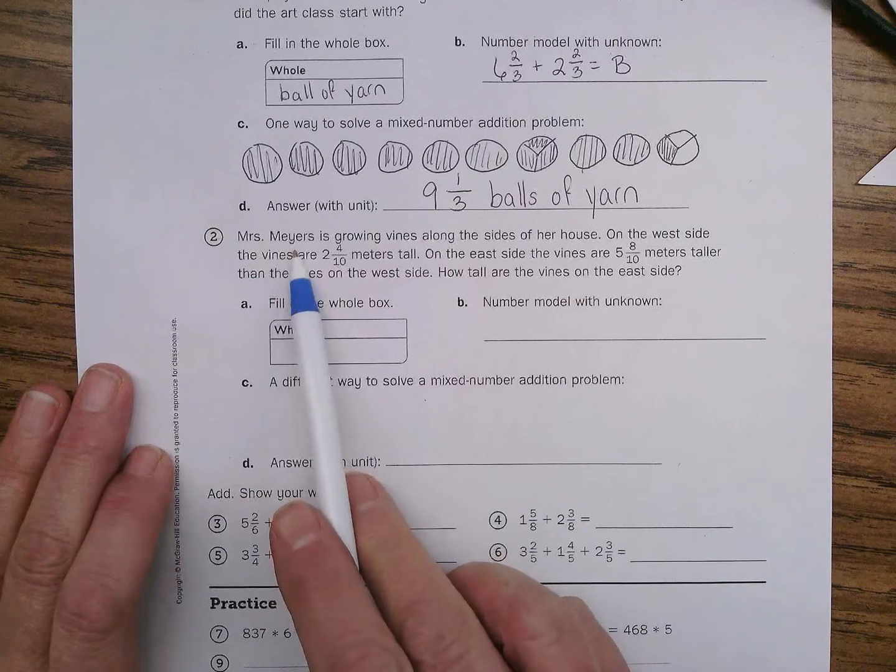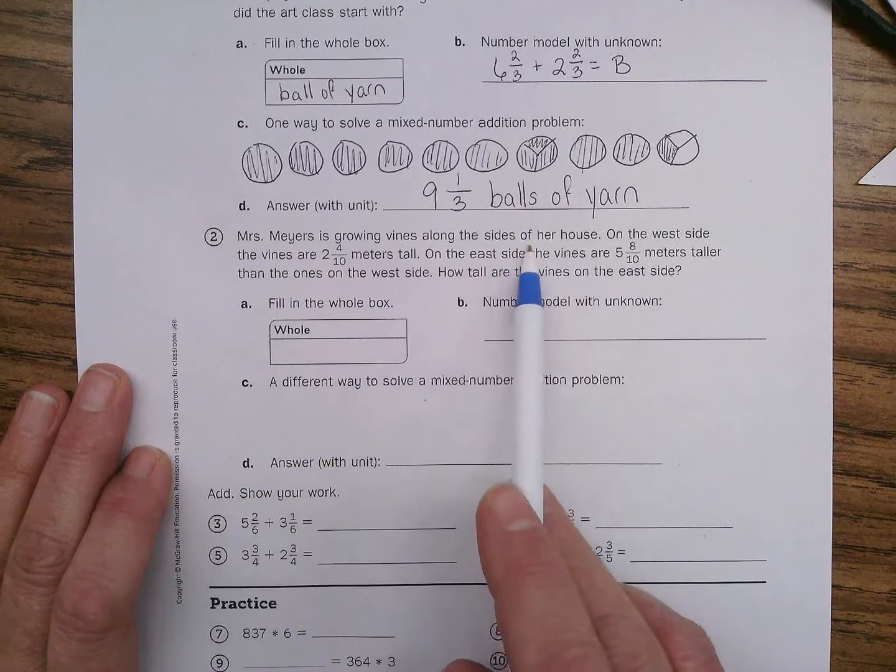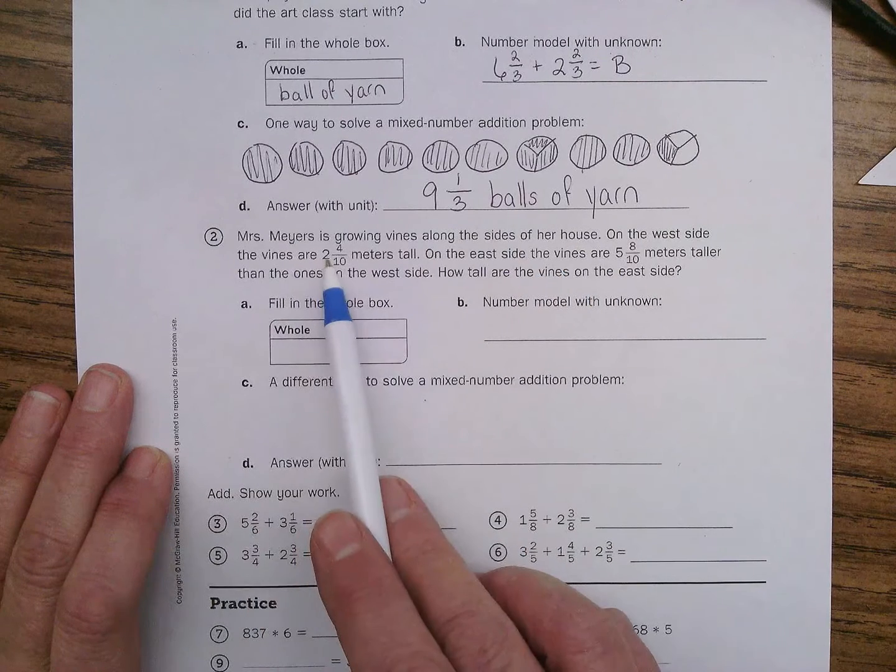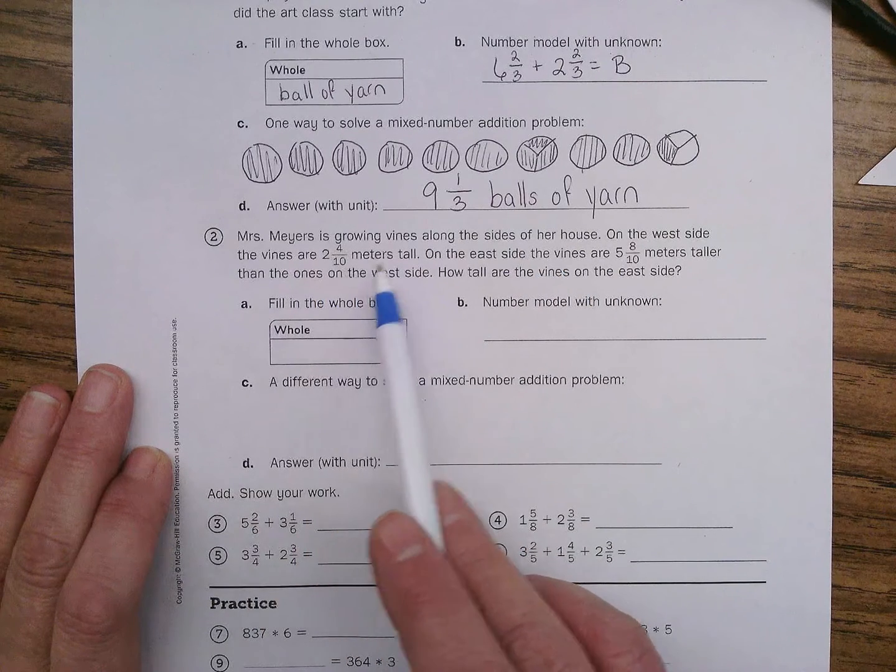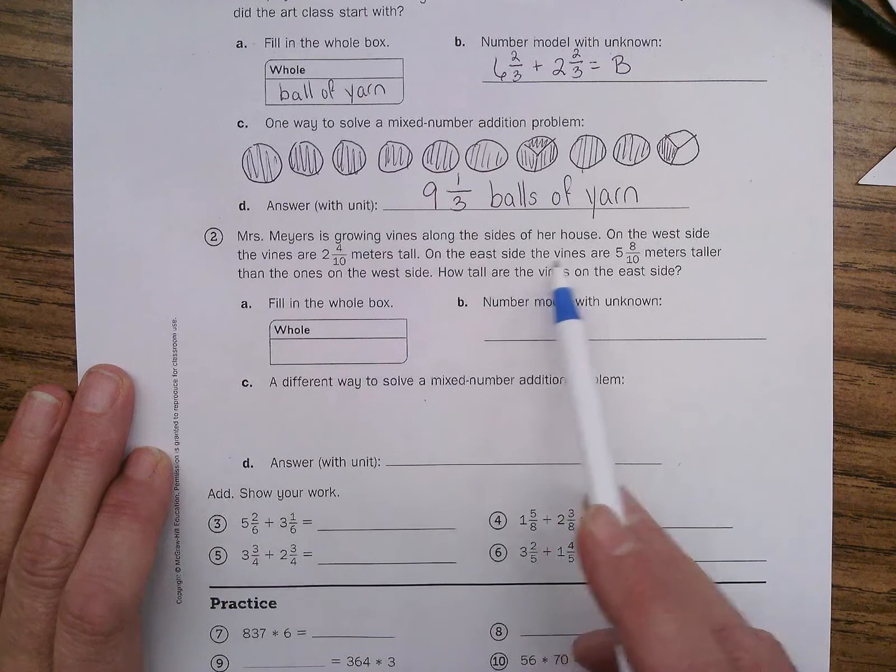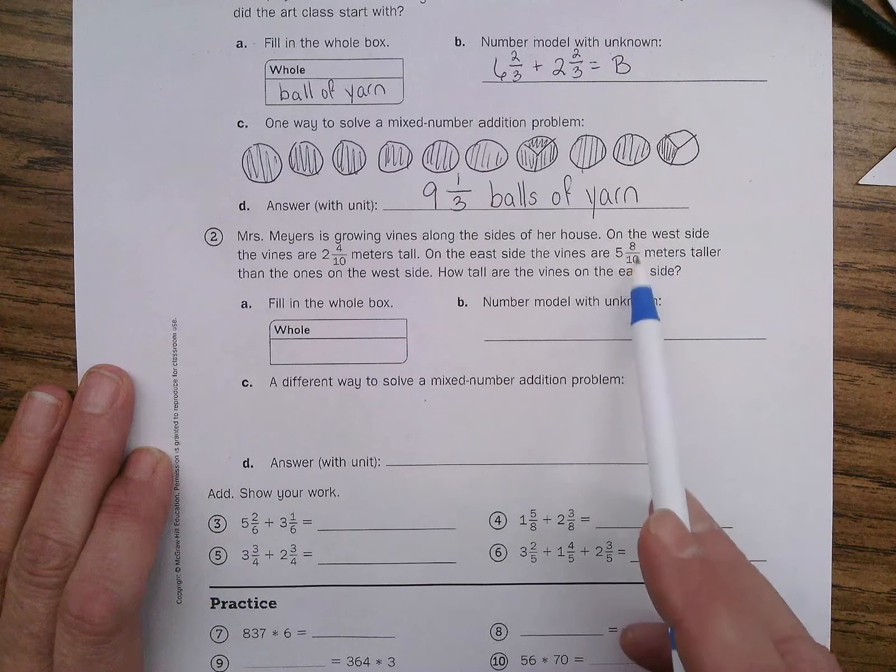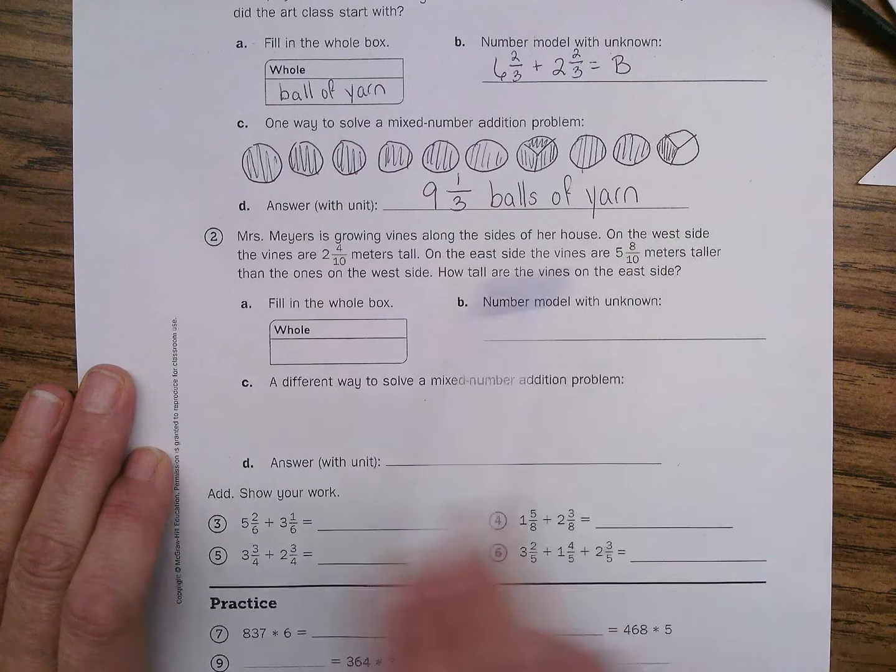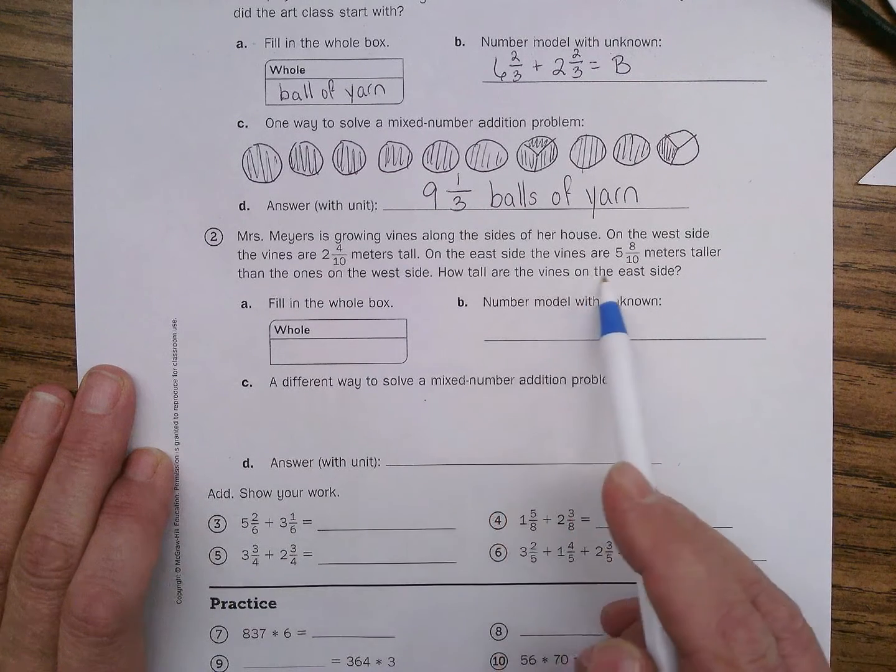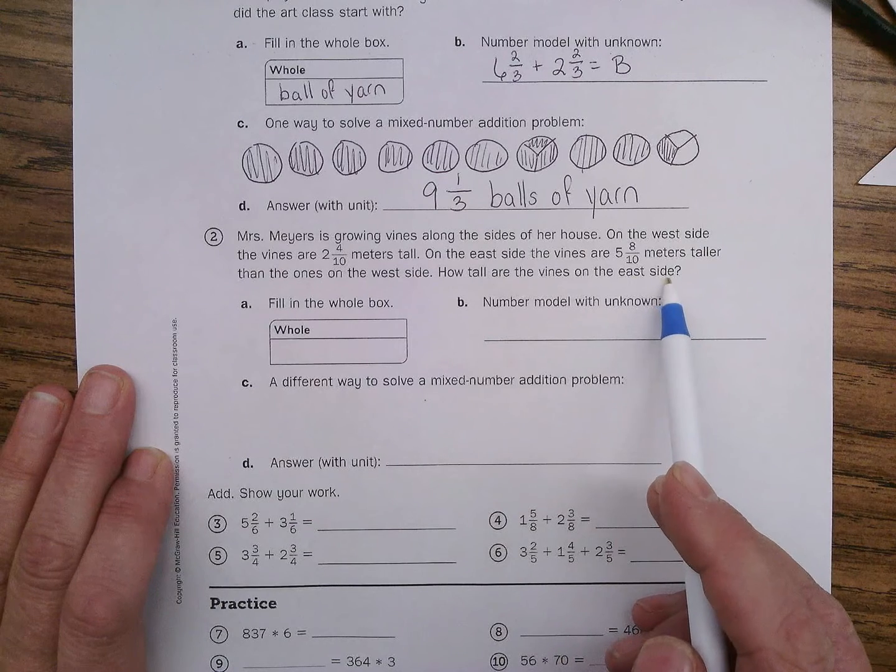Mrs. Myers is growing vines along the sides of her house. On the west side, the vines are two and four-tenths meters tall. On the east side, the vines are five and eight-tenths meters taller than the ones on the west side. How tall are the vines on the east side?